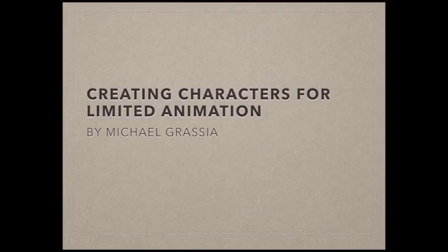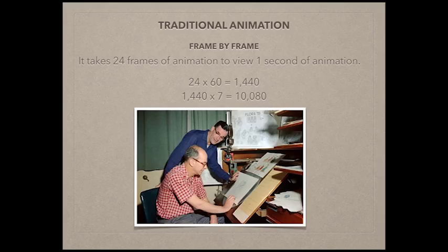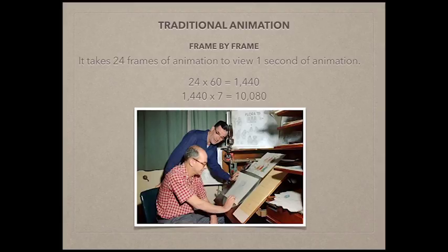In original animation back then, we used to take photos by a camera — which we still can do technically on the computer — by placing them on your timeline frame by frame. Back then, we used to shoot 24 frames a second, and that means there are 24 images for one second of animation.